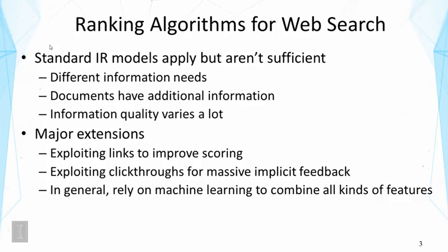As a result, people have made a number of major extensions to ranking algorithms. One line is to exploit links to improve scoring, and that's the main topic of this lecture. People have also proposed algorithms to exploit large-scale implicit feedback in the form of click-throughs — that falls under feedback techniques, where machine learning is often used. In general, web search ranking algorithms use machine learning to combine all kinds of features, many based on standard retrieval models such as BM25 or query likelihood, to score different parts of documents. Link information also provides additional scoring signals.